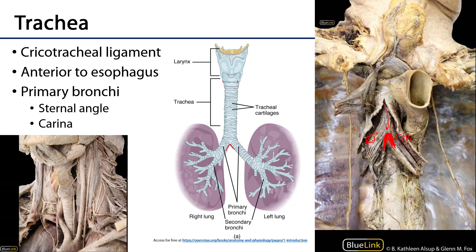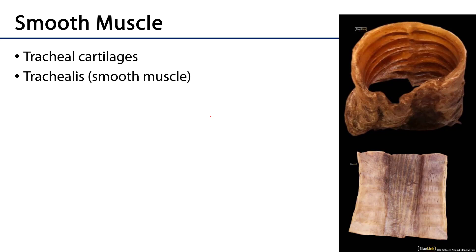Notice that the trachea has a number of tracheal cartilages. These are hyaline cartilages that help to maintain the patency of the tracheal passageway. Posteriorly — this is a posterior view — we can see that the tracheal cartilage is incomplete. That posterior aspect is a combination of connective tissue and smooth muscle called the trachealis, which we can see between these two lines, and it helps to determine the size of the lumen of the trachea.